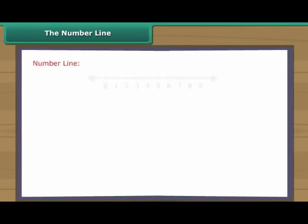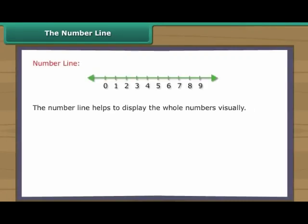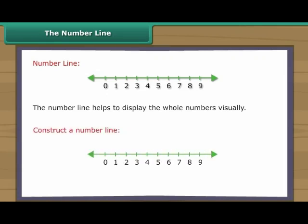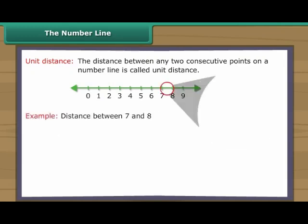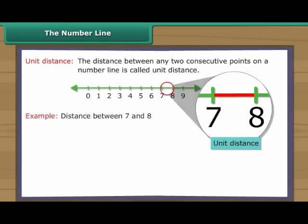The number line helps to display the whole numbers visually. To construct a number line, we simply draw a straight line and choose any point on the line and label it zero. This point is called the origin. We then choose some convenient length and moving to the right, mark off consecutive intervals along the line starting at zero. We label each new interval endpoint with the next whole number. The distance between any two consecutive points on a number line is called unit distance.